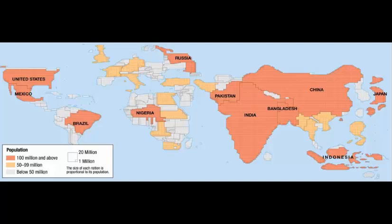Looking at the clusters in the world, the first one would be East Asia. East Asia includes China, North and South Korea, and Japan. South Asia is defined as India and Bangladesh.